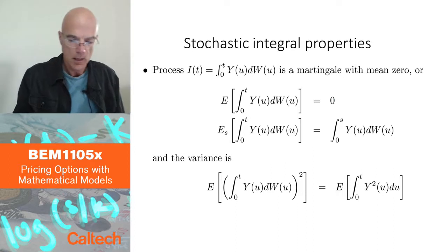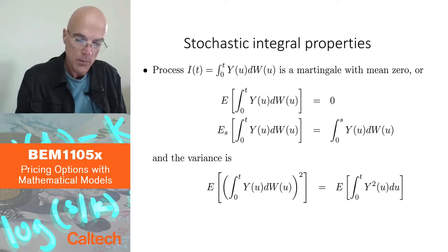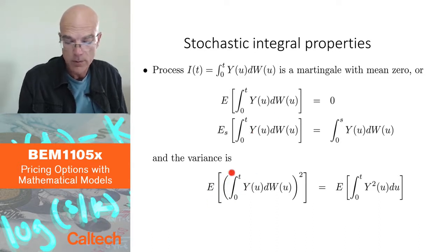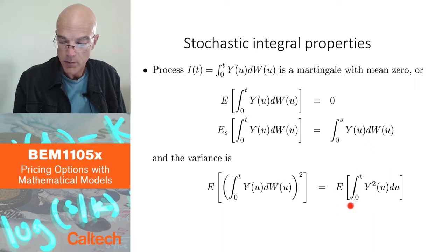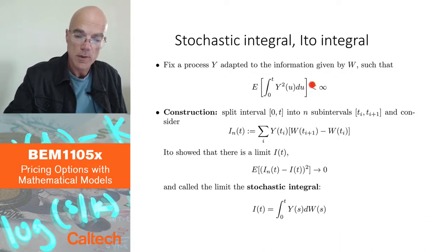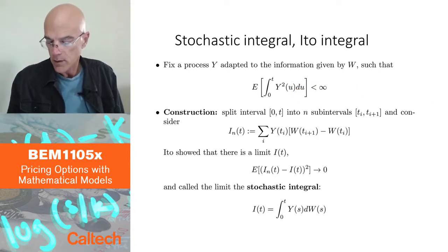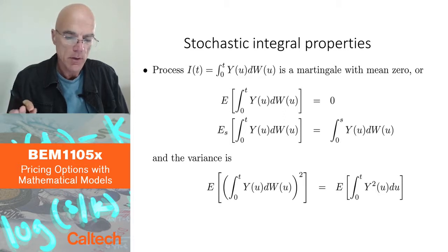You can also compute the variance. The variance, since the mean is zero, is just the expected value of this martingale squared. By definition of the variance, if the mean is zero, the variance is the second moment — the expected value of the random variable squared. There is a formula, and it's exactly what we had in the previous slide: it's the expectation of the integral from zero to t of y squared of u du. This was assumed to be finite. That assumption really was an assumption that the variance of the stochastic integral is finite. That's exactly the assumption that the variance is finite. In our examples in this course, it's going to be satisfied that the variance is finite.